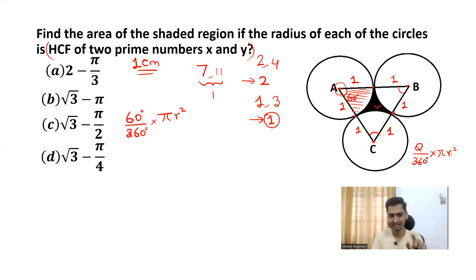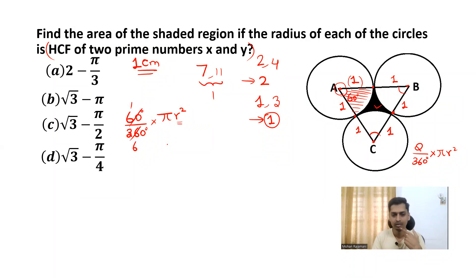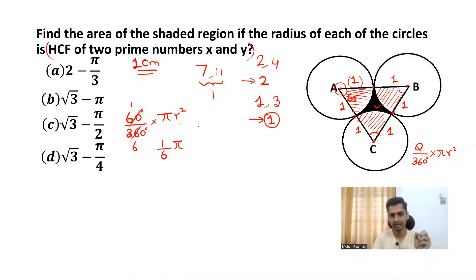For a 60-degree sector, it is 60/360 × πr². Simplifying, you get 1/6 × πr². Since the radius is 1 cm, r² = 1, so the sector area is π/6. There are three such sectors — each also 60 degrees — giving the same area three times. So total area of three sectors = π/6 × 3 = π/2.